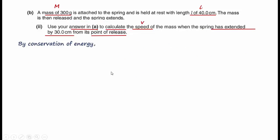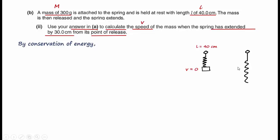Applying conservation of energy, we need two points: the point of release and after the spring has extended by 30 cm (L = 70 cm). We draw a diagram: initially the spring is at rest at length 40 cm; finally the spring has extended by 30 cm to L = 70 cm, and we want the speed at that point. We are told to use the elastic potential energy from Part A, which corresponds to L equals 70 cm.